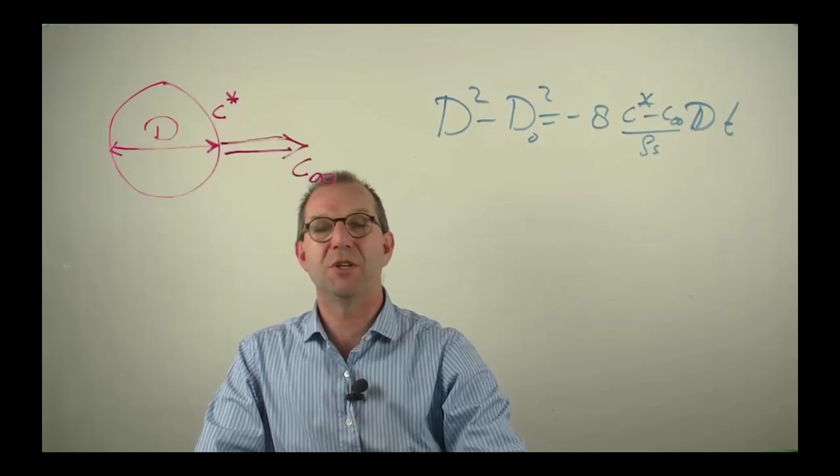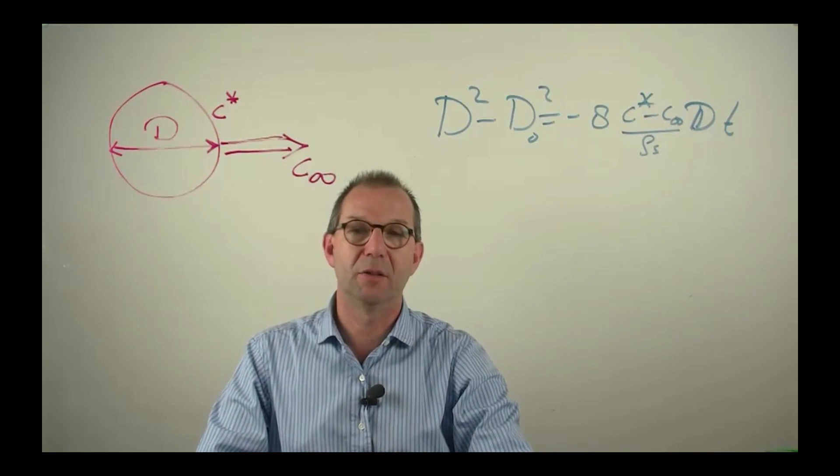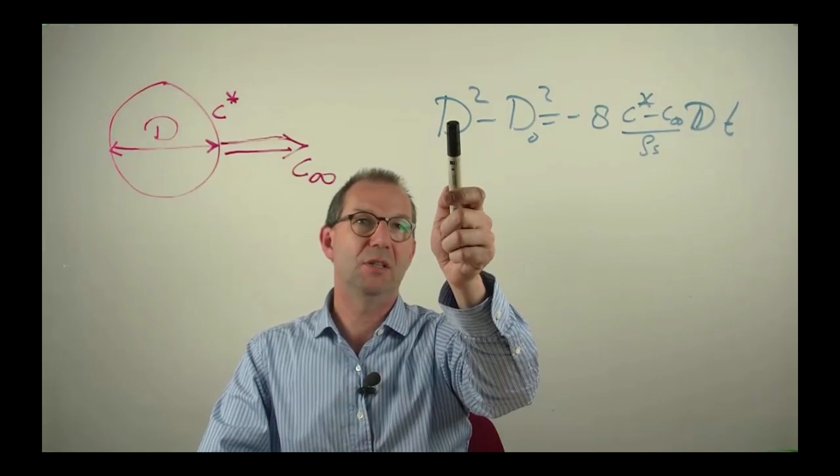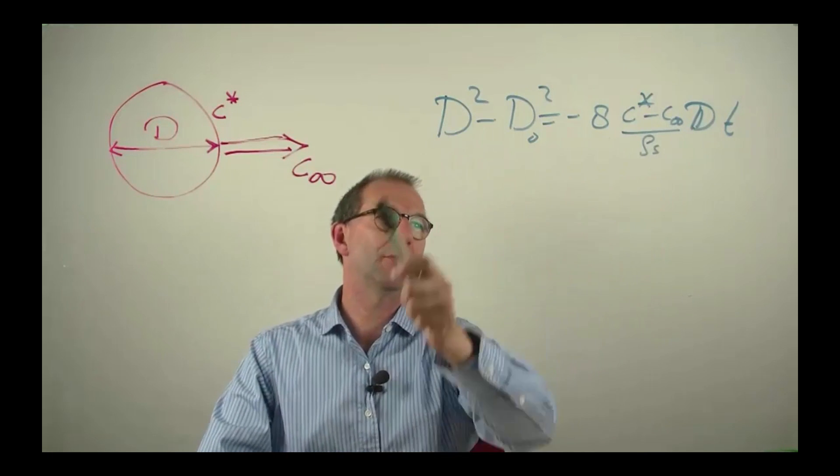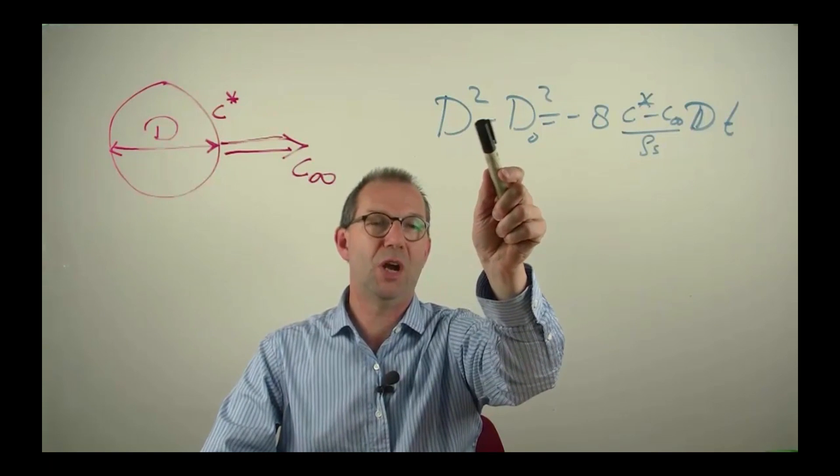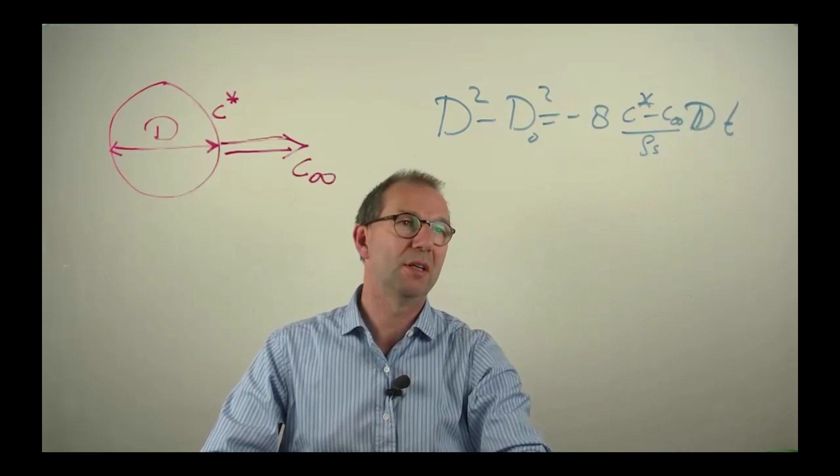Due to a higher concentration around the sphere and hardly any in the air far away from it, we backed out from a mass balance that the change in diameter is given by this equation. The diameter at current time minus that initially is given by this, proportionally to t.